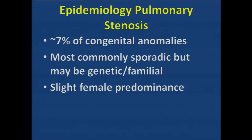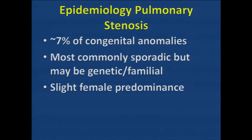Turning to pulmonary stenosis: it means the pulmonary valve is narrowed. Epidemiologically, it accounts for about 7% of all congenital heart disease — a relatively common congenital lesion. It is commonly associated with other lesions, including Tetralogy of Fallot, transposition, and tricuspid atresia. Most commonly sporadic, it can also be genetic or familial, with a slight female predominance.